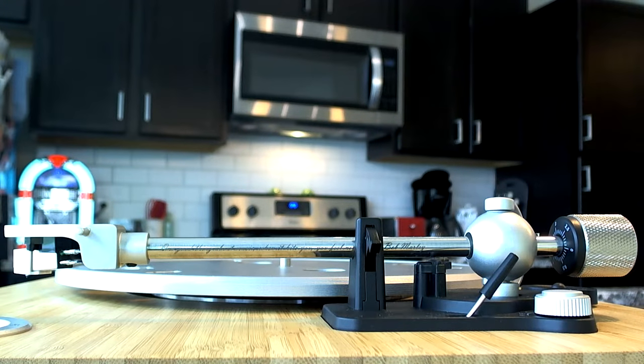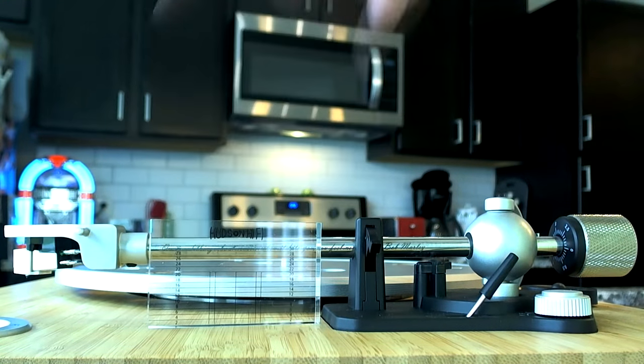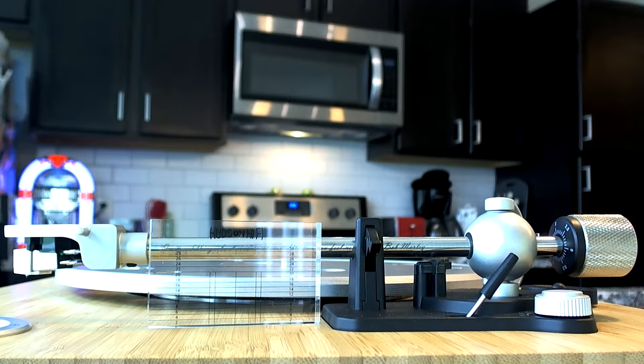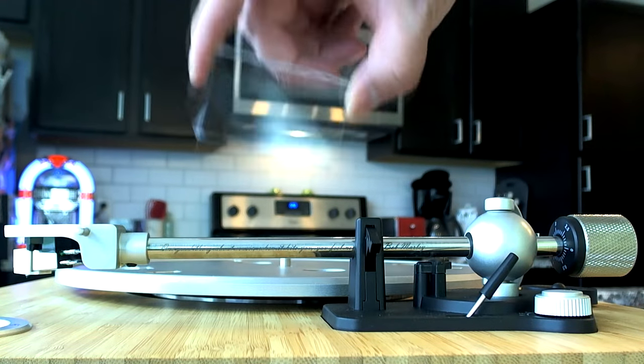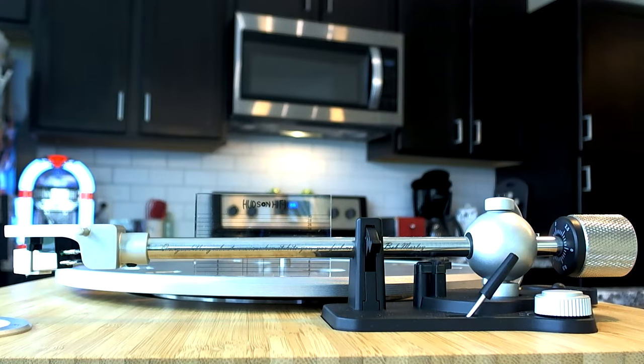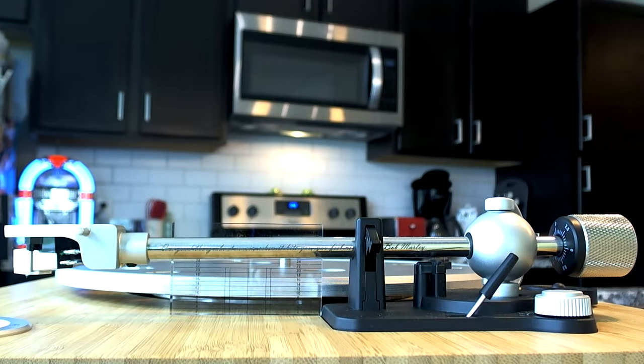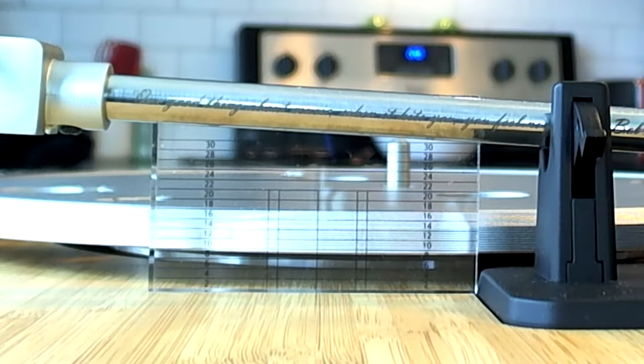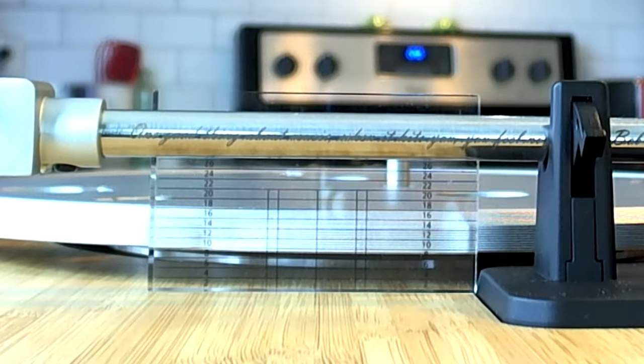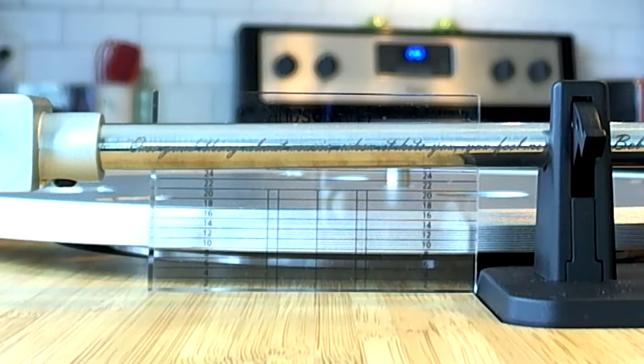Okay another very important aspect of configuring your turntable is vertical tracking alignment or VTA. So Hudson Hi-Fi has available this really cool acrylic block that you can use to assist you in not only aligning the cartridge but also setting the VTA, the vertical tracking alignment of the tonearm. So in order to do that just take your tool and either place it on the platter like that or you can even set it down here in front like that. Then with your tonearm unclipped you can raise and lower the tonearm into a resting position like this and make sure that it is level.